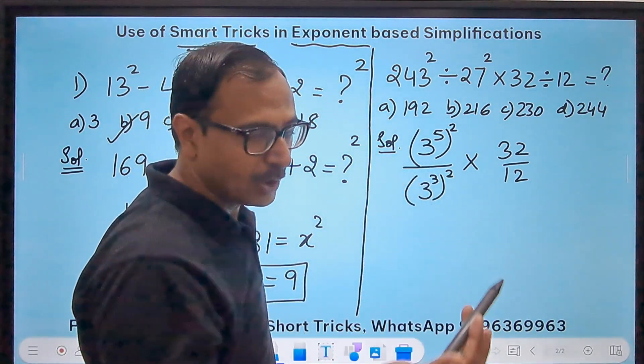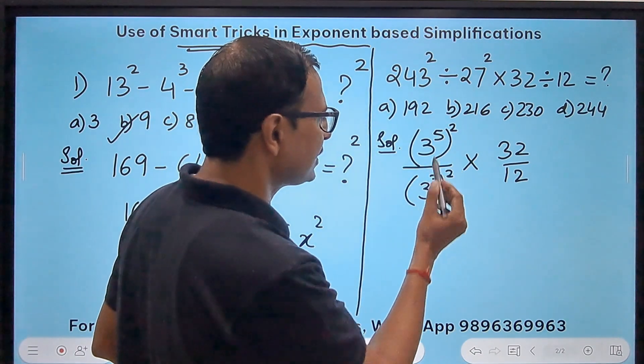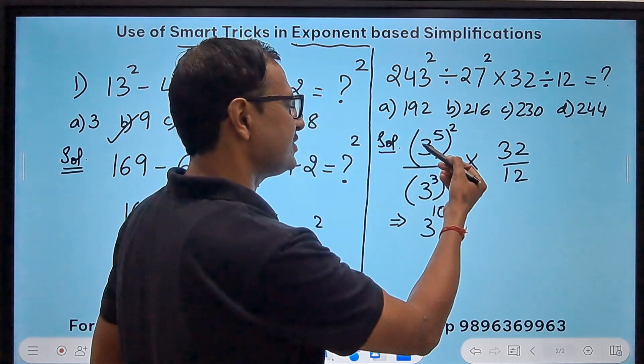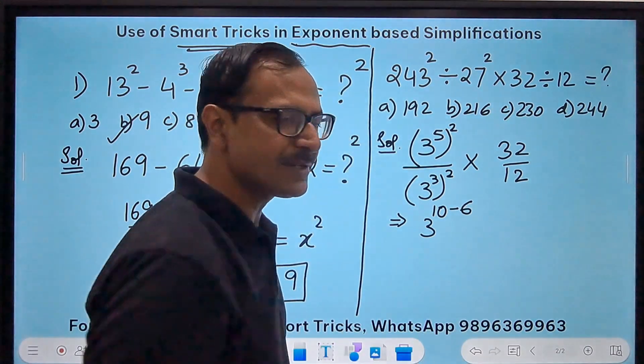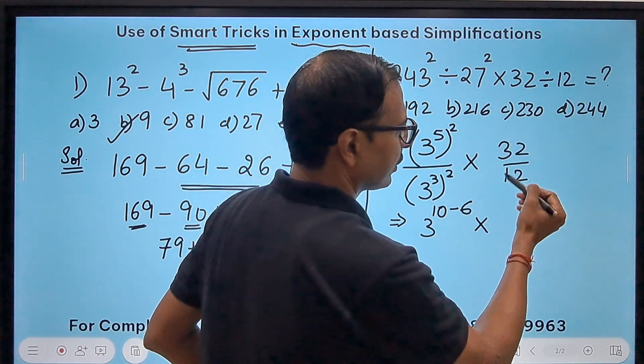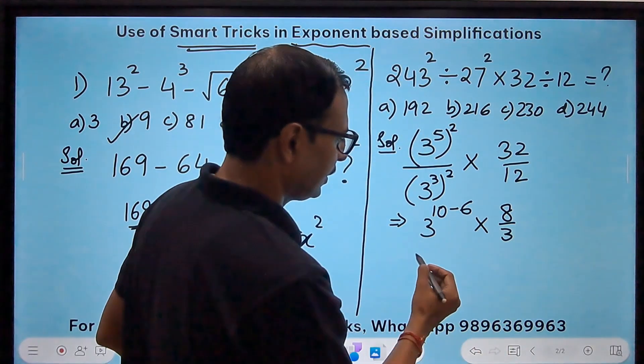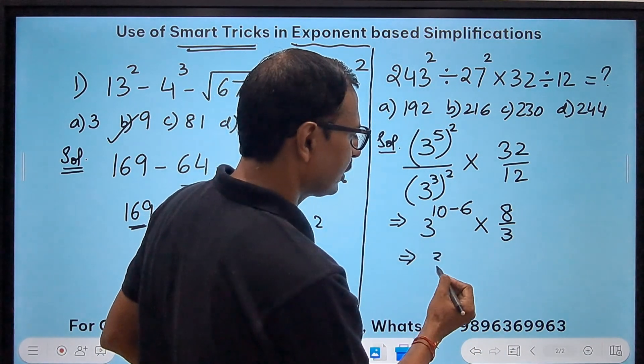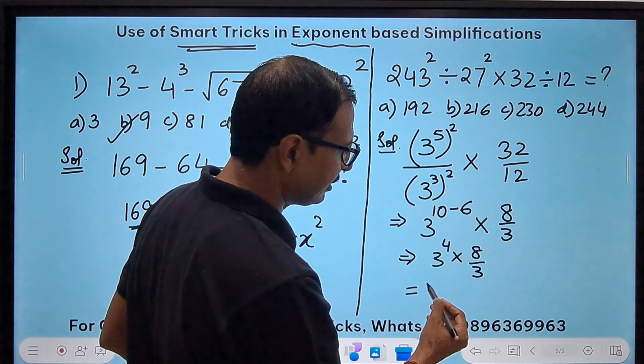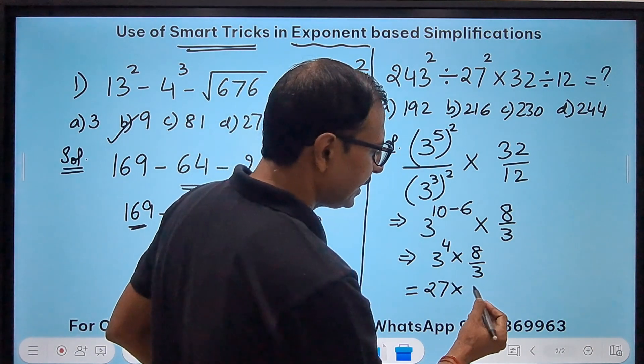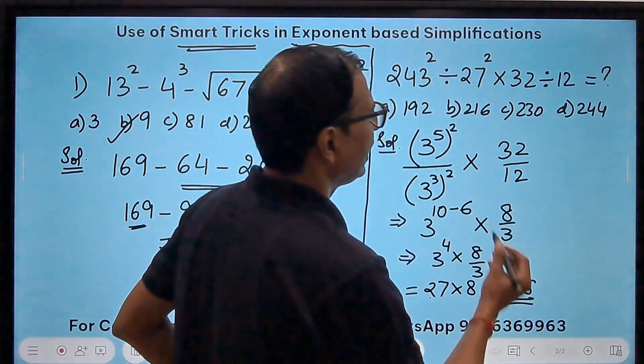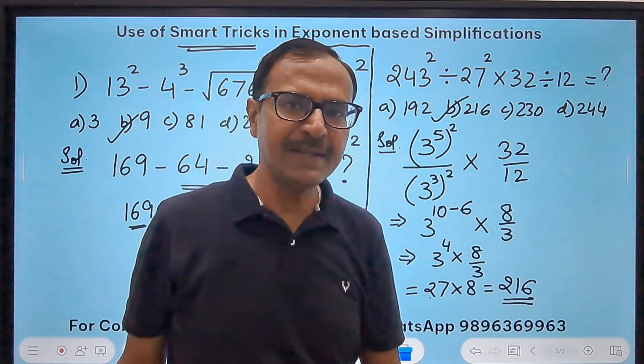Now this is how you need to express the question and if you can do that next step is pretty easy. Why? Because we have to apply the law of exponent here. So here you can see this becomes 3^10 and in the denominator 3^6. So since the base is same you will be subtracting the exponents. So 10-6 and 32÷12, I think they are divisible by 4. So this is 8÷3. Now this becomes 3^4 × 8÷3 and obviously one of the 3s will get cancelled. So you will have a 3³ which is 27 and an 8. Now this is 160+56, that is 216, which is the answer for the question.